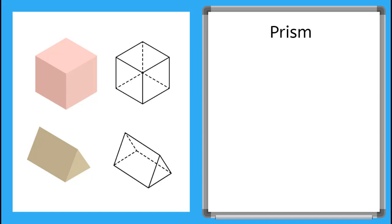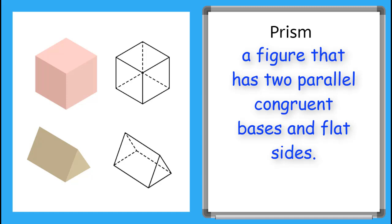The first solid figure we are going to talk about is a prism. A prism is a figure that has two parallel, congruent bases and flat sides. The bases can be any polygon.